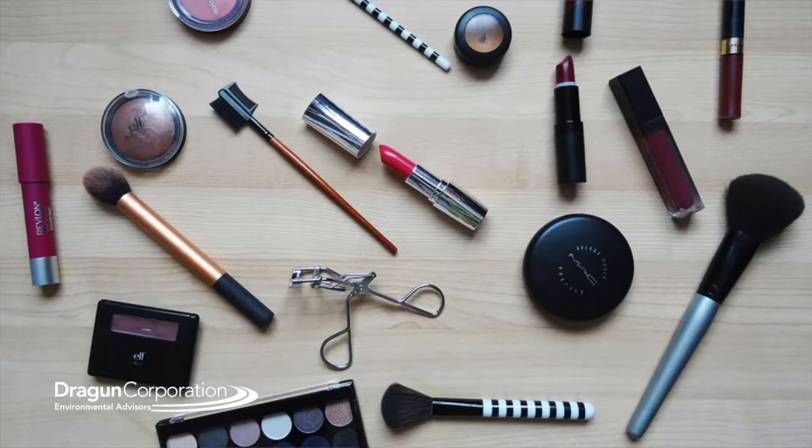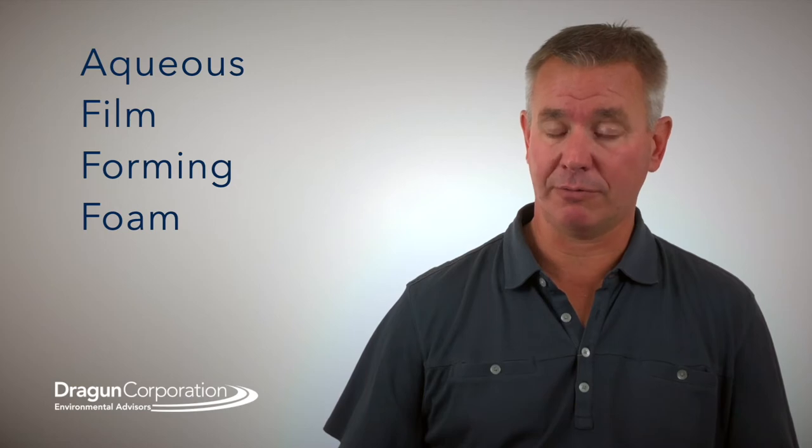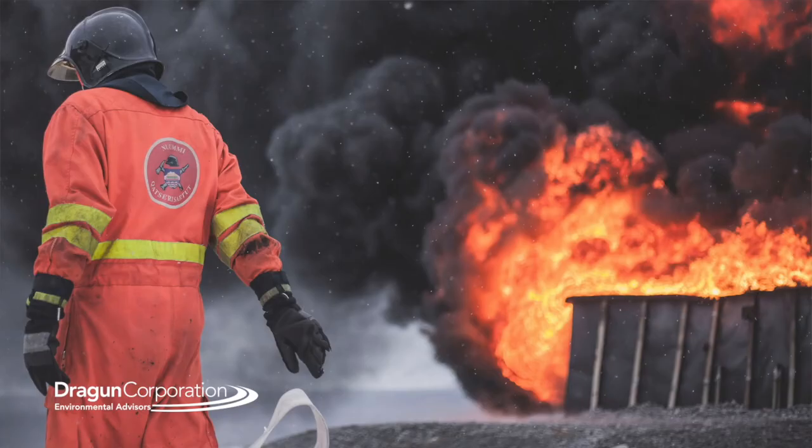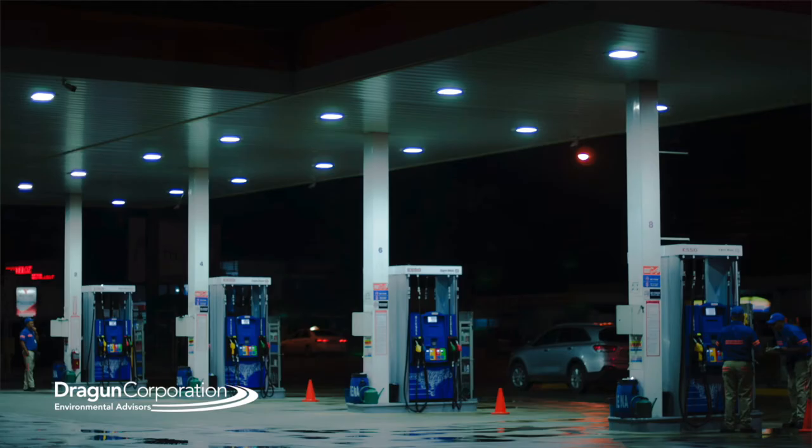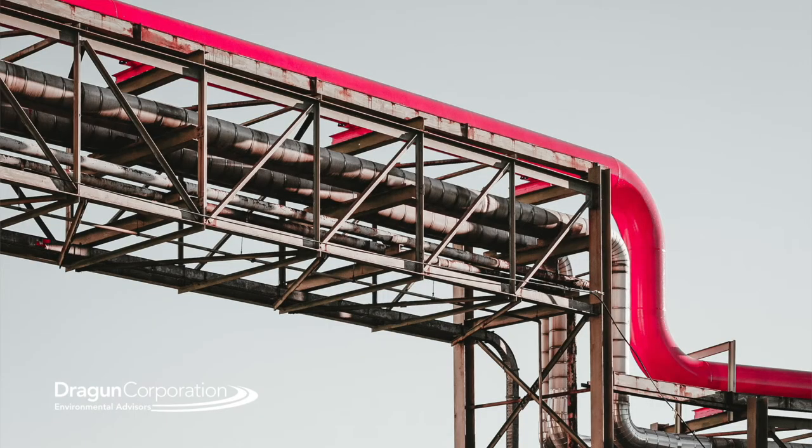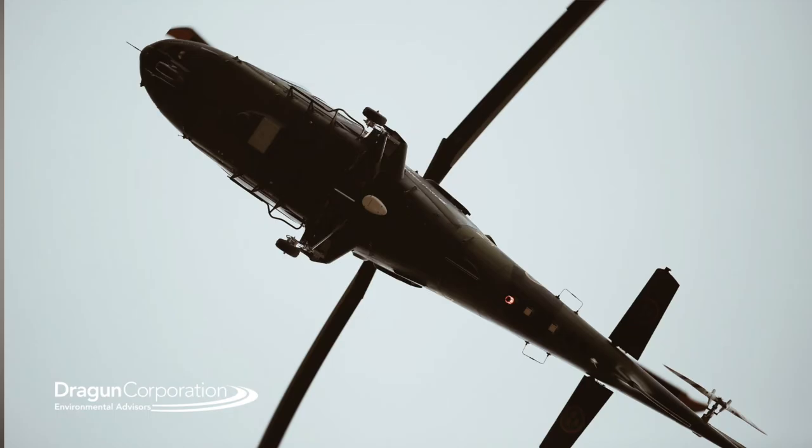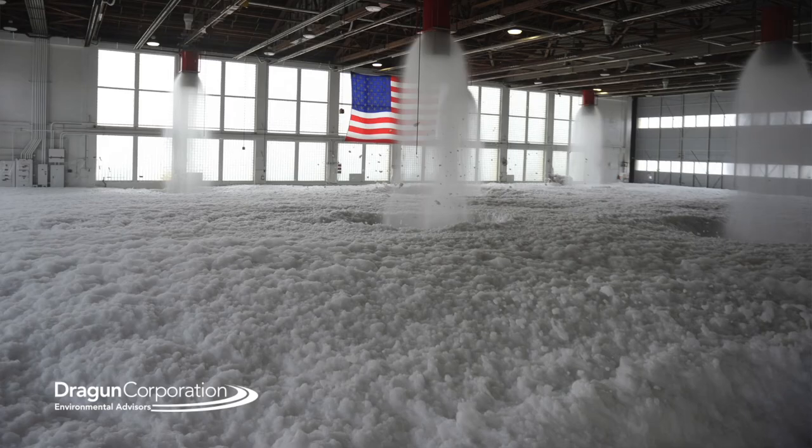PFAS is also found in a lot of commercial products like makeup and sunscreen. And then one of the most common ways that PFAS has been used is in something called AFFF which stands for aqueous film forming foam. What that's used for is to fight fires generally that are fuel related. So you'll find that at airports and gas stations and chemical manufacturers and military bases, any place where there's a lot of fuel storage typically will have a foam firefighting system that has AFFF.